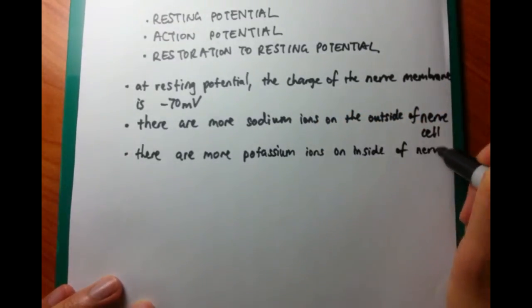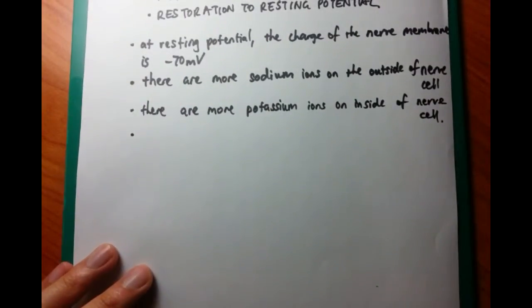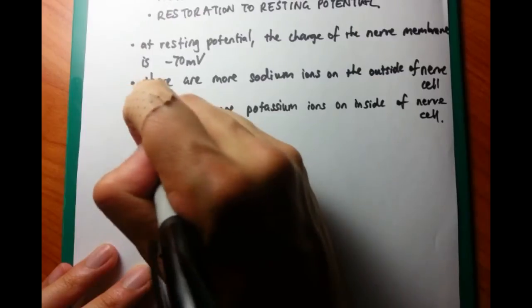So there are more potassium ions on the inside of the nerve cell. Now, what happens is that we move to talk about the action potential.